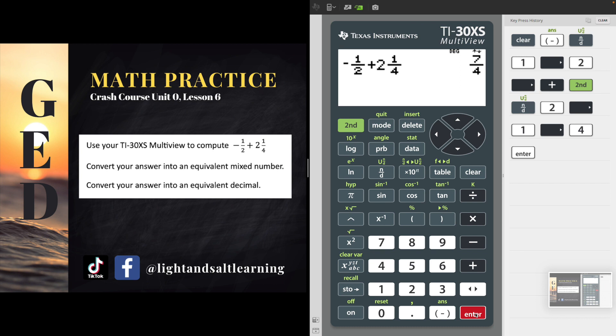So conversions, or going back and forth between different forms of the same number, are indicated on your GED calculator using these arrows. Like you can see right up here in the middle, we have the N D with the double arrows to U N over D, or the F D with the double arrows to D. And so if you want to go from a pure fraction to a mixed number, it's that first one, that N over D to UN over D.